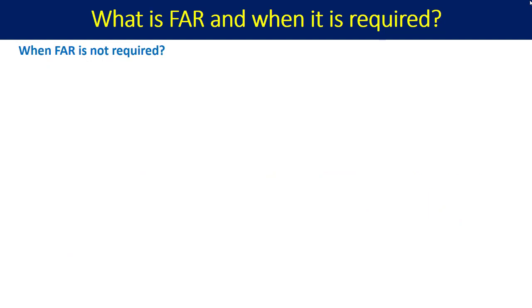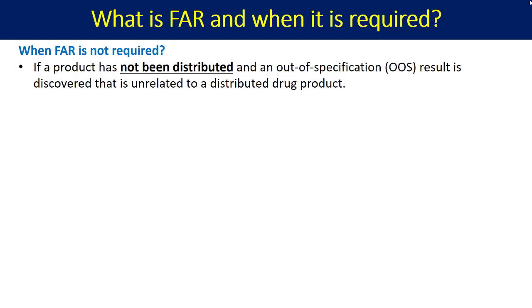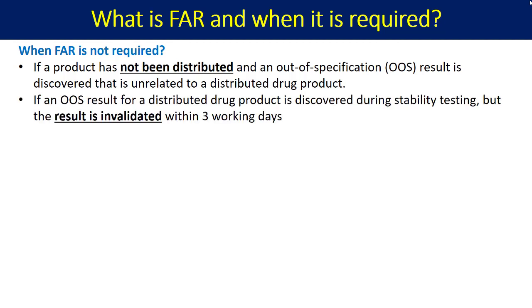Now let us understand in which conditions FAR is actually not required. First, if a product has not been distributed and an OOS result is discovered that is unrelated to distributed drug products, FAR is not required. Second, if an OOS result for a distributed drug product is discovered during stability testing but the result is invalidated within three working days — meaning you prove the result was due to an aberration in measurement or analytical error, not related to product quality — FAR is not required.